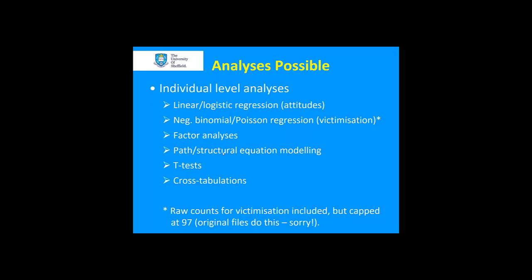What kind of analyses are possible? Since all the data is retained at the individual level, all things you would typically associate with individual-level analyses are possible — linear or logistic regressions, negative binomial or Poisson regressions for things like victimization counts, factor analyses, path or structural equation models, t-tests, cross-tabs, and anything else you would normally perform on individual-level data.